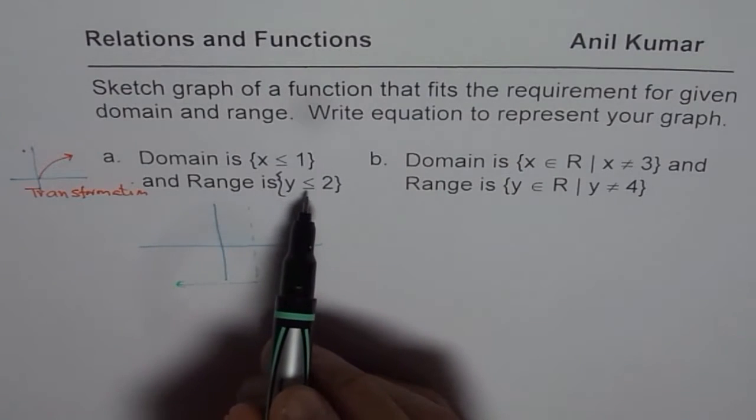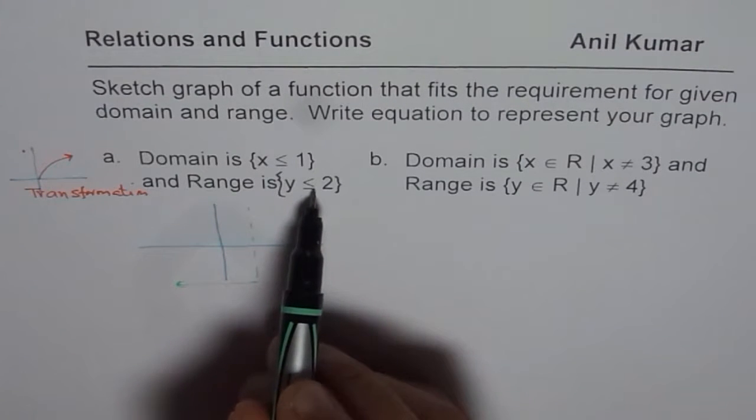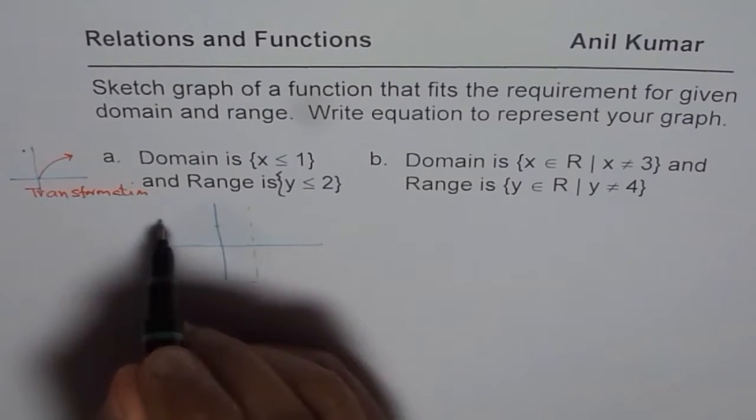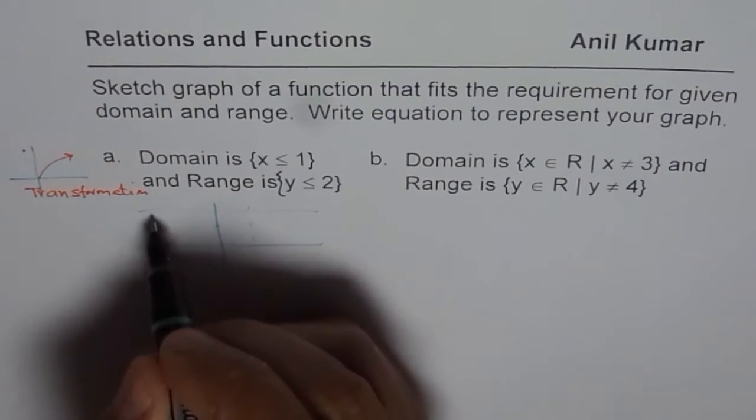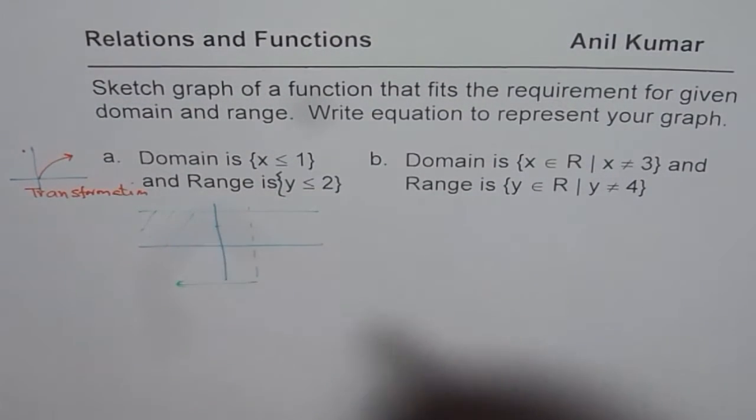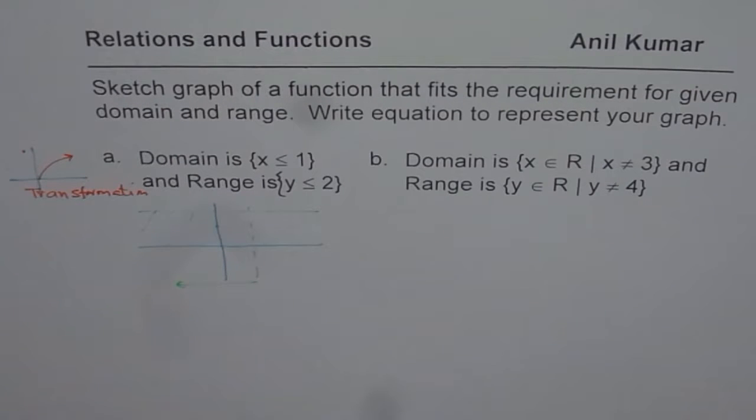As far as the range is concerned, it is less than equal to 2. So let's say this is 2 for us. Then we are looking for something which goes below 2. Including 2.